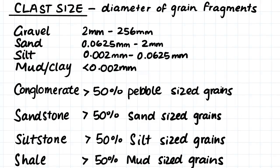Our clast size is just the diameter of the grain fragments, and we divide our grains up into four groups. If we find a grain that is 2mm up to 256mm, we would classify this as gravel. Grains that are between 0.0625mm up to 2mm in diameter are sand.